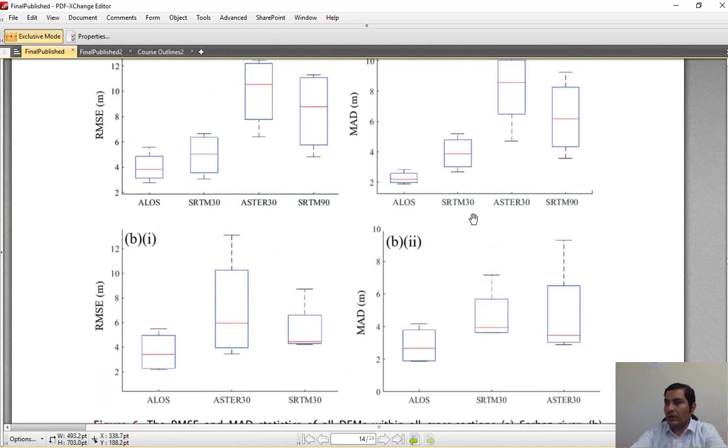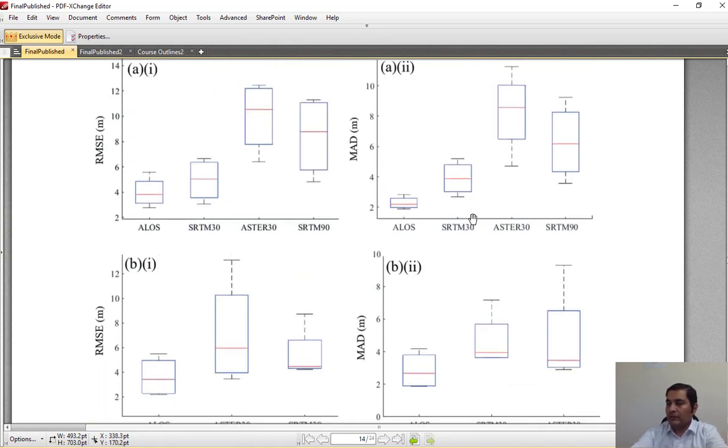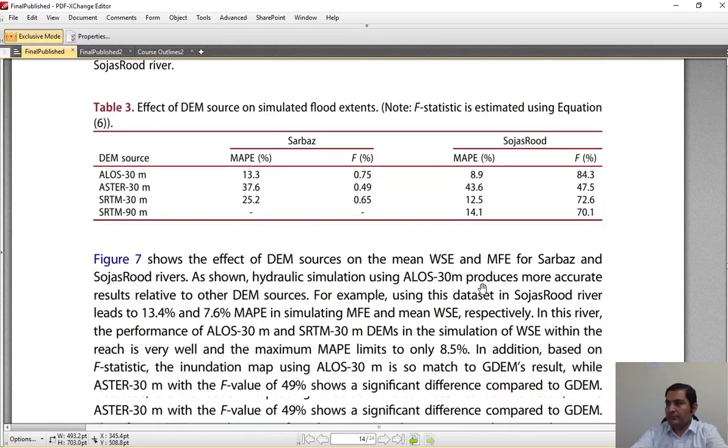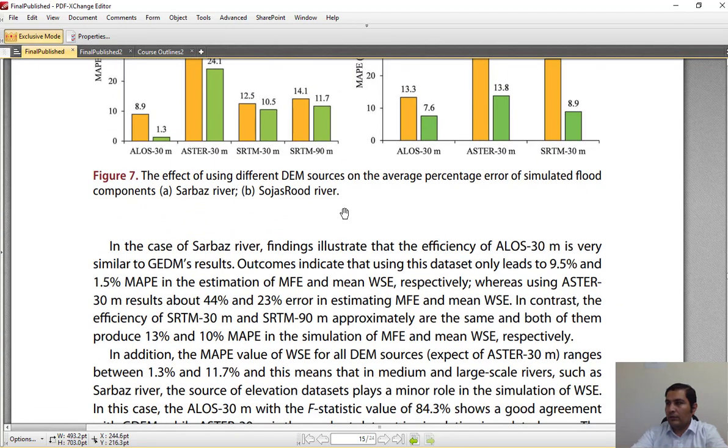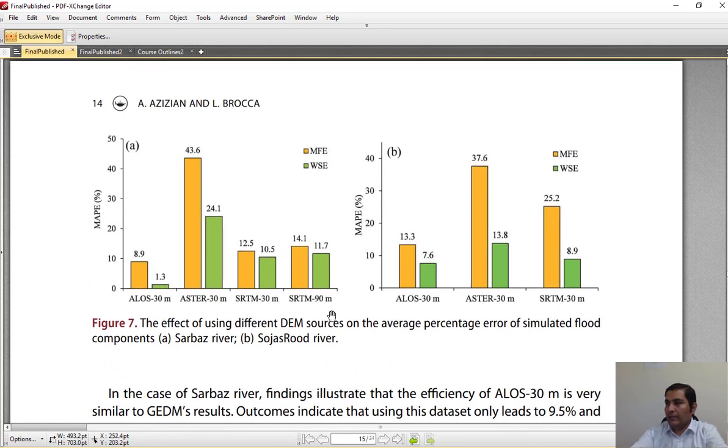These are the statistical variations of all DEMs. In this figure, you can see the effect of using DEM sources on the average percentage error of simulated flood components.